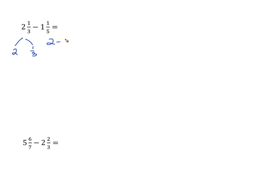So we have two minus one — I'm going to decompose the subtrahend as well — minus one-fifth. Two minus one equals one, minus one-fifth. One minus one-fifth is four-fifths. Now that's what's left of our whole.